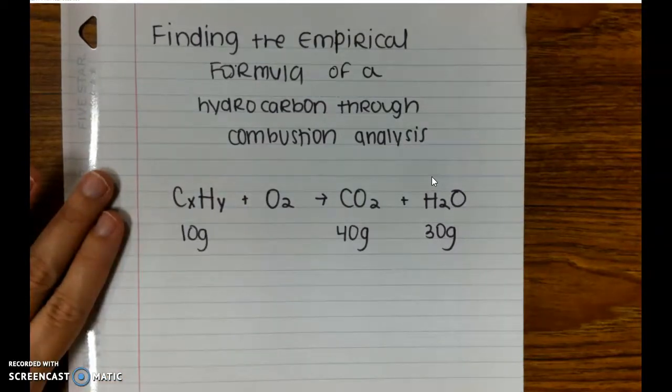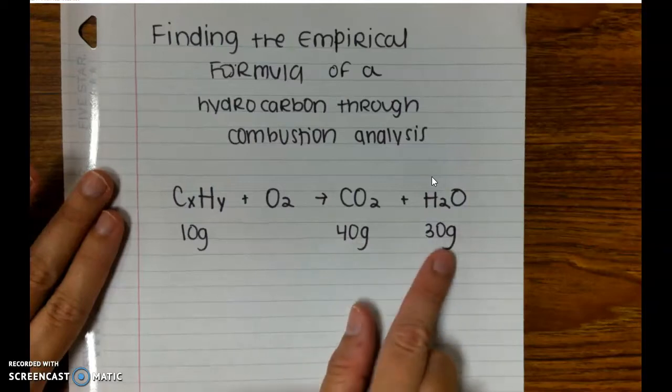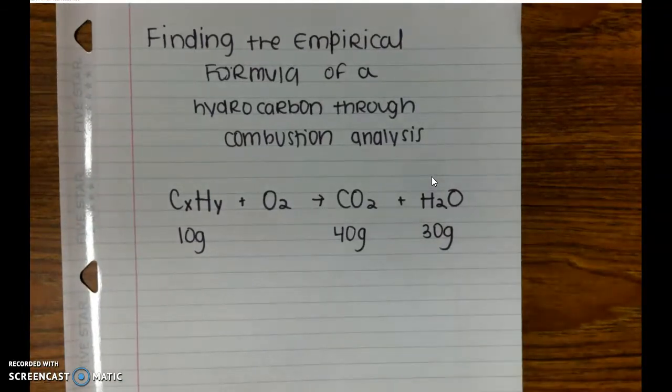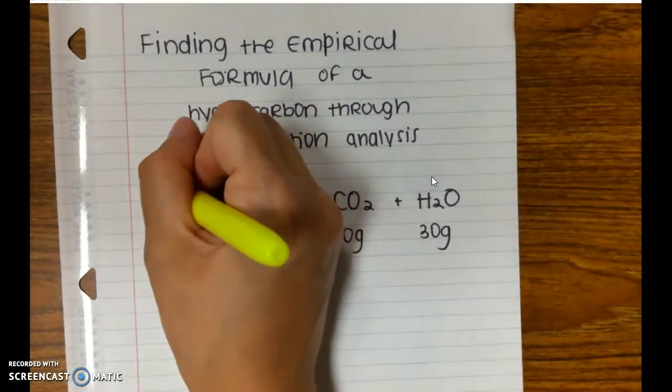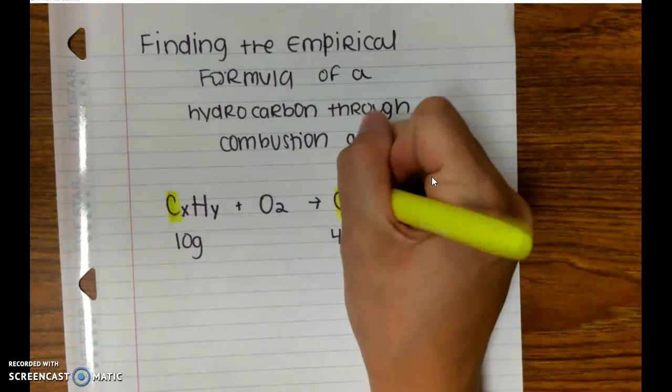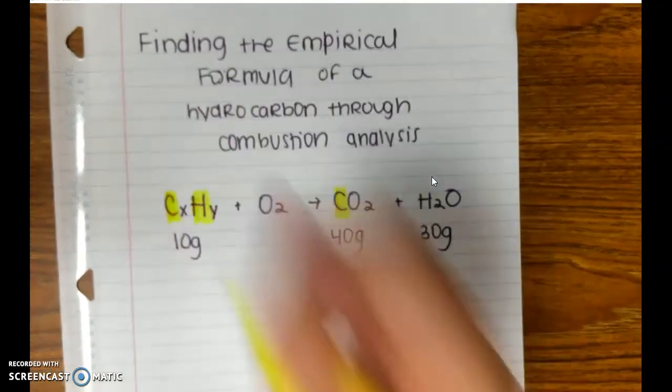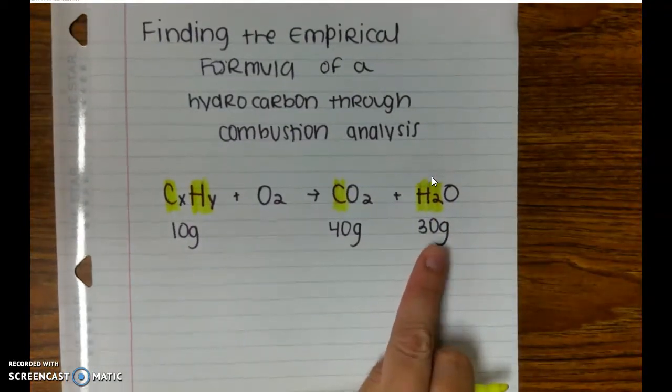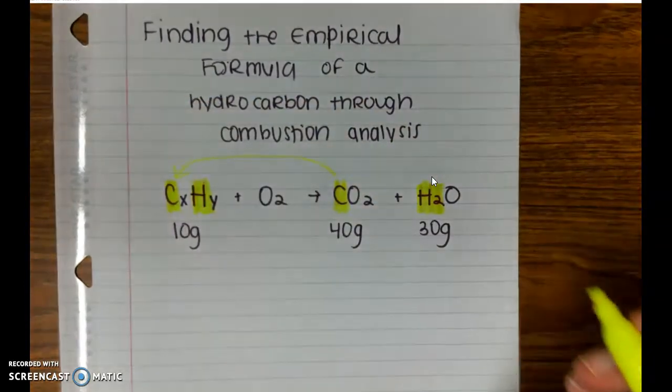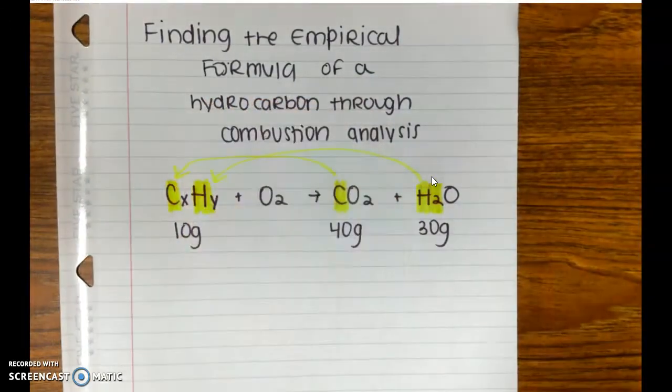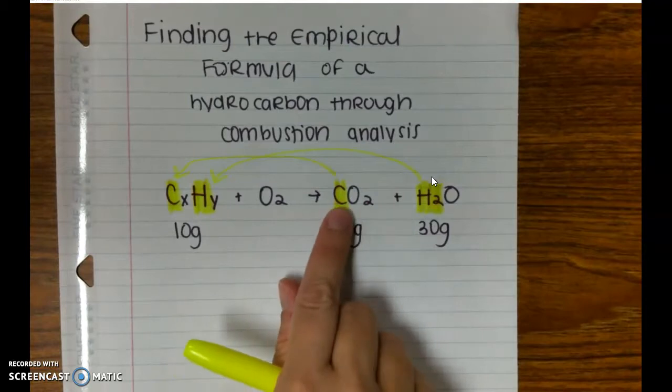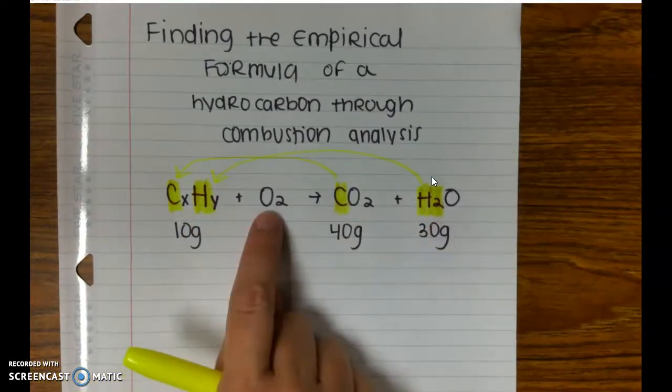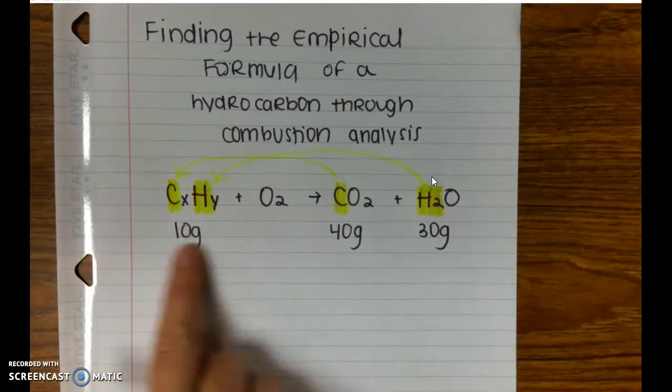What confuses students is the CO2 and the water. What do we do with those numbers? If you think back to the law of conservation of mass, matter can never be created or destroyed. So all of the carbon atoms went to CO2, all of the hydrogen atoms from the hydrocarbon went to water. We can use these values to figure out how many carbon atoms were in the original sample and how many hydrogen atoms were in the original sample.